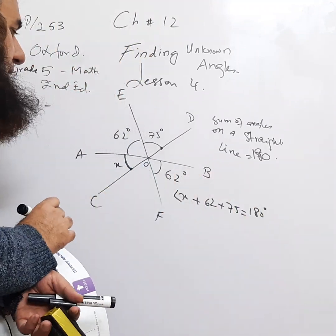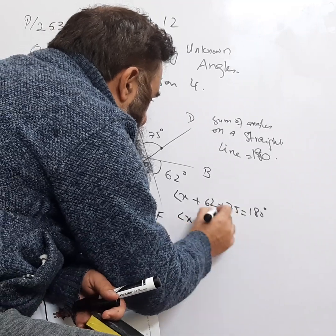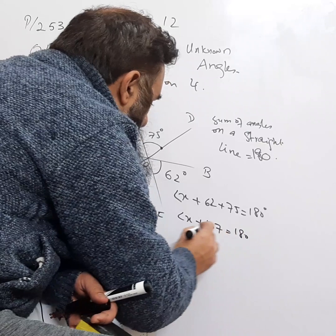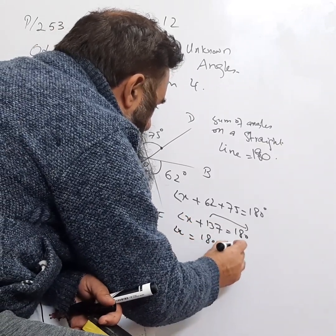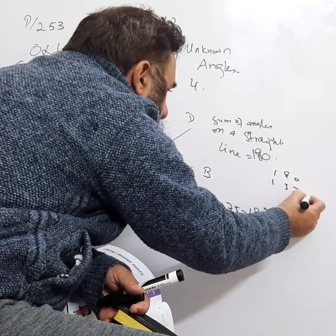It will go to other side, it will be subtracted. Angle x is equal to 180 minus 137. 180 minus 137.